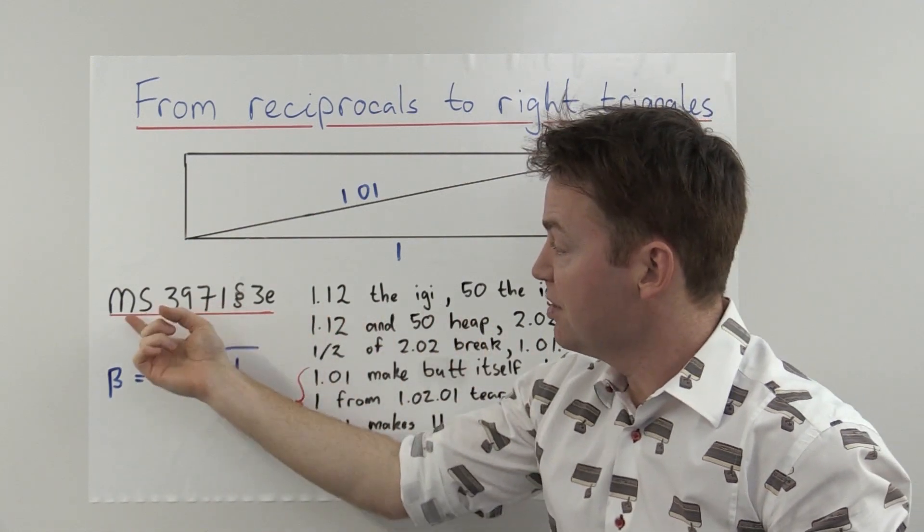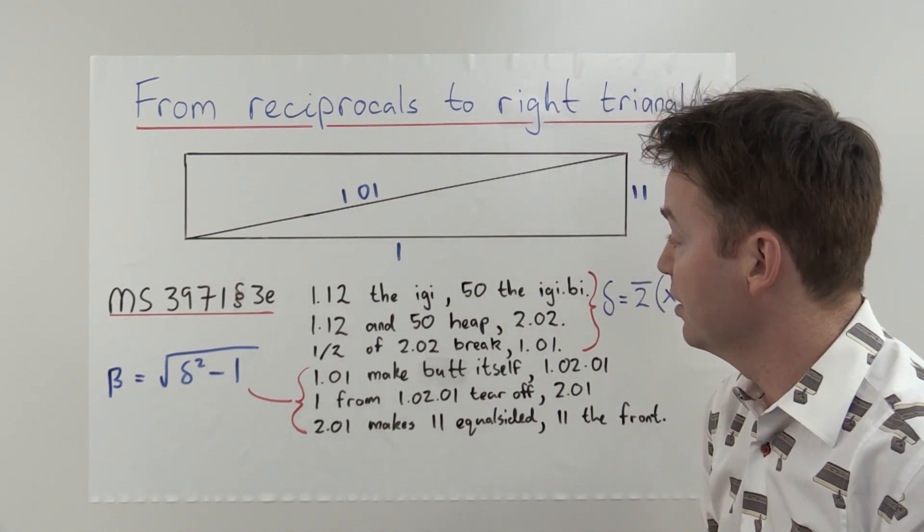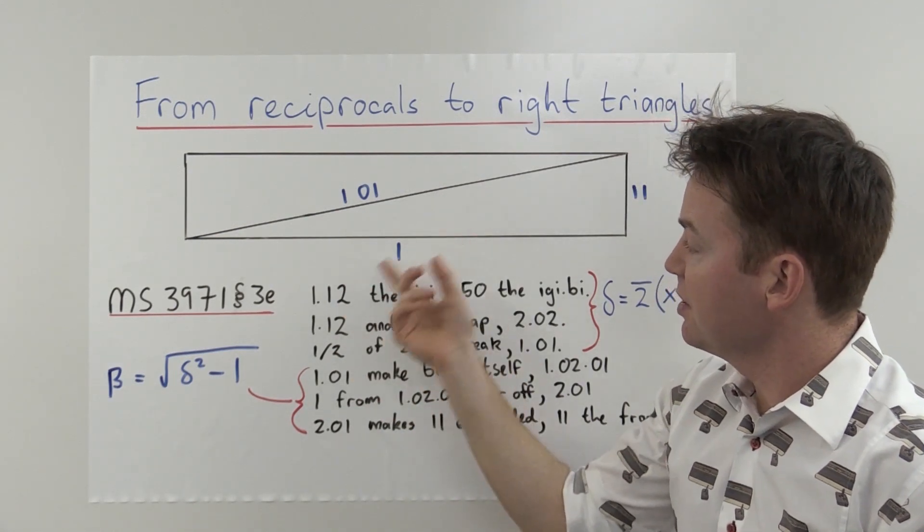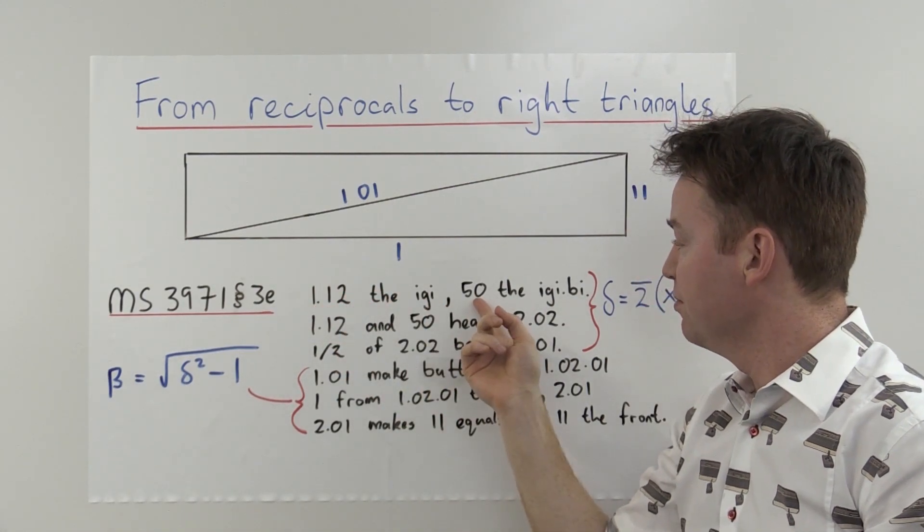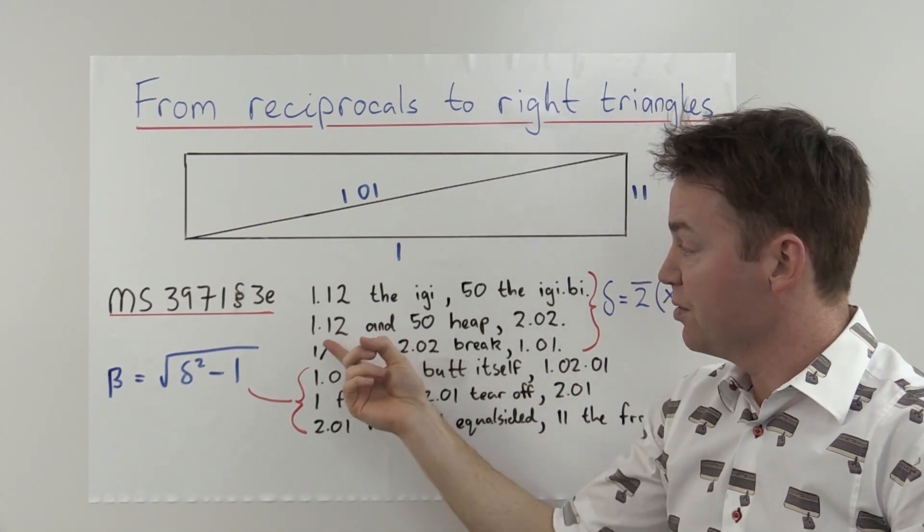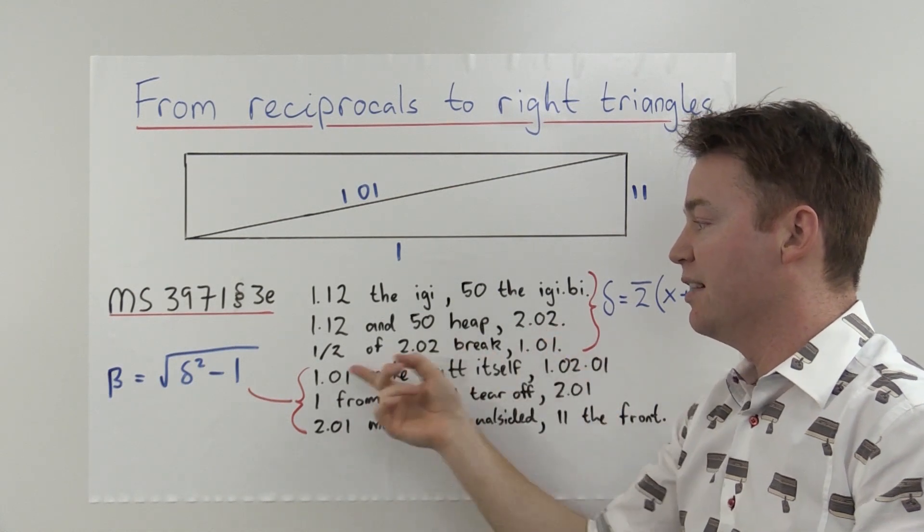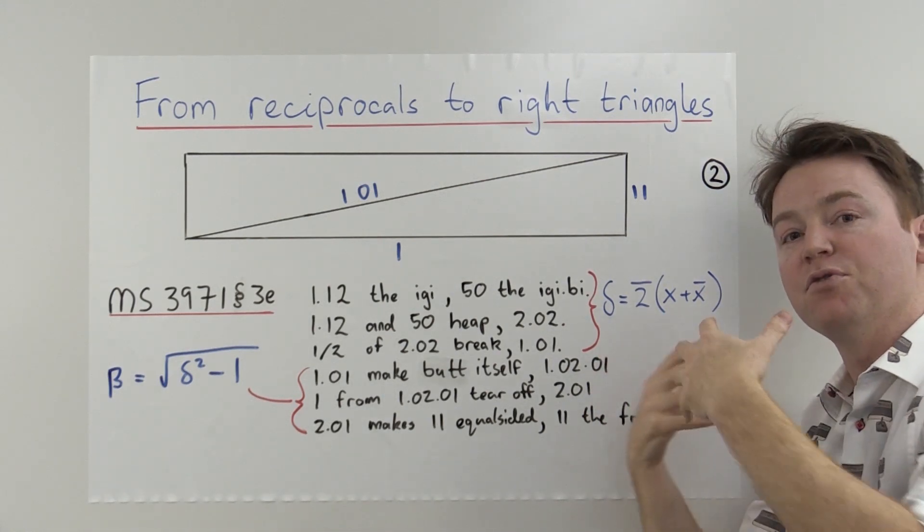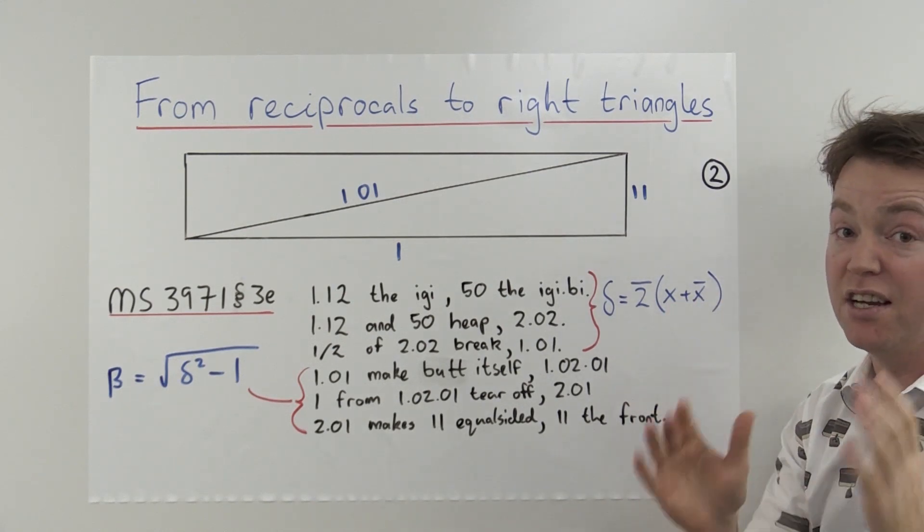Reciprocal numbers play a very important role in this story. We'll see here how they used to get from a pair of reciprocal numbers into a geometric object, in this case, a right triangle or rectangle. This example here is taken from MS 3971 part 3e from Friberg's publication in 2007, Mathematical Cuneiform Texts. You have this pair of reciprocals, 1:12, the Iggy, and its reciprocal 50 is called the Igigy. It's a number and its reciprocal. And the procedure goes as follows: you take the number and its reciprocal and you add them or heap them, and the sum is 2:02.